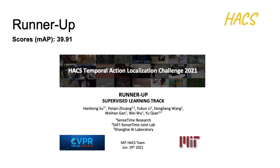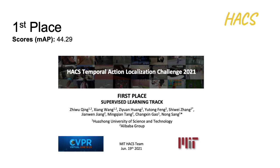The winner of this year's challenge: the first place of the Supervised Learning Track goes to Zhi Wu Qing, Xiang Wang, Zi Yuan Huang, Yutong Feng, Shi Wei Zhang, Jian Wen Jiang, Ming Qian Tang, Chang Xin Gao, and Nong Sang from Huazhong University of Science and Technology and Alibaba Group. They achieved a mean AP score of 44.29, which is impressive and state-of-the-art on our dataset. Congratulations!